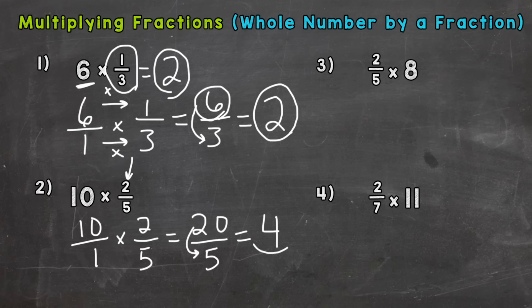Let's go to number three. 2/5 times 8. Put 8 over 1 so we have a top and a bottom and then multiply straight across. 2 times 8 is 16 and 5 times 1 is 5.